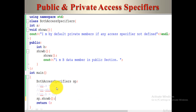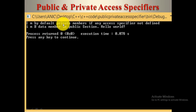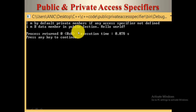After commenting out the erroneous lines, we simply call showB. The output is: 'I am a private member — if any access specifier is not defined, I will be private,' and 'I am B.' This demonstrates the public and private access specifiers working together.